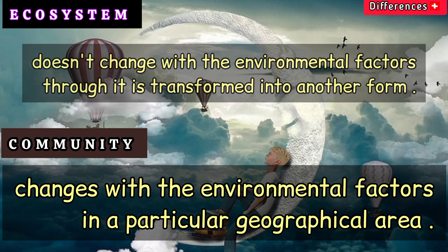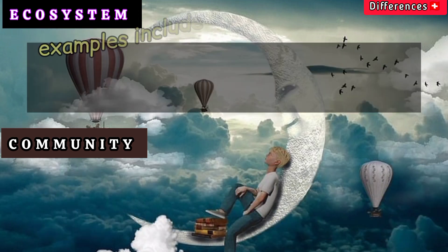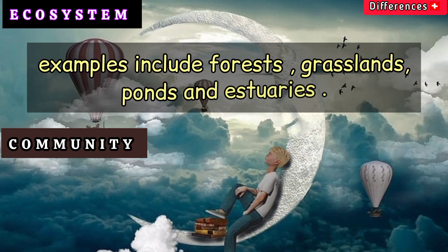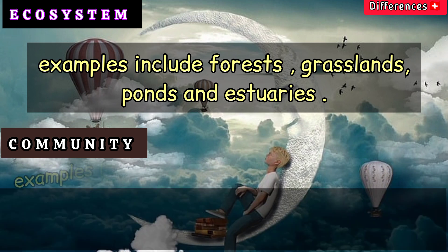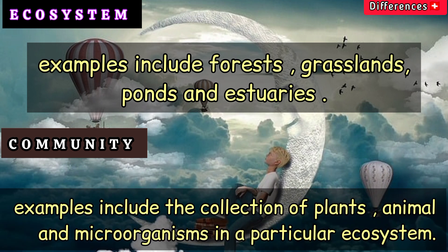Ecosystem examples include forests, grasslands, ponds, and estuaries. Community examples include the collection of plants, animals, and microorganisms in a particular ecosystem.